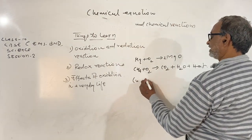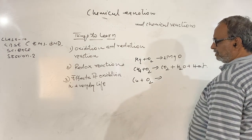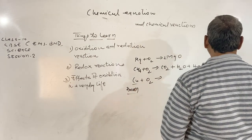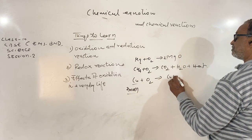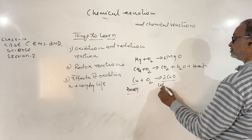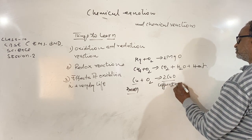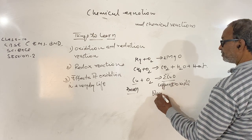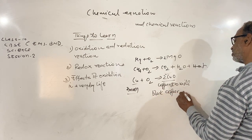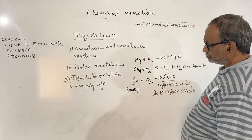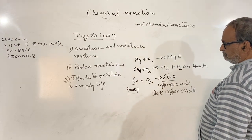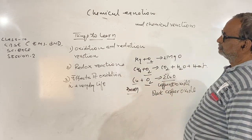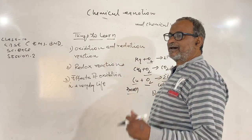When copper is heated in the presence of air, copper, which is a brown metal, gets coated with a black layer of copper(II) oxide. Since it is black in color, it is also known as black copper oxide. So the chemical reactions in which oxygen is combined to a substance are called oxidation reactions.